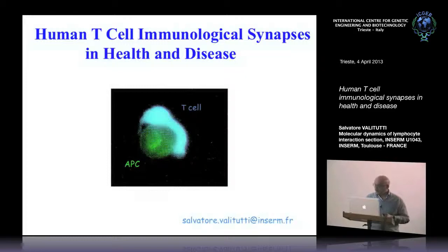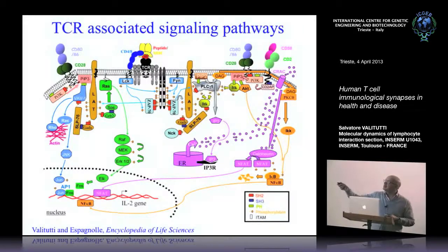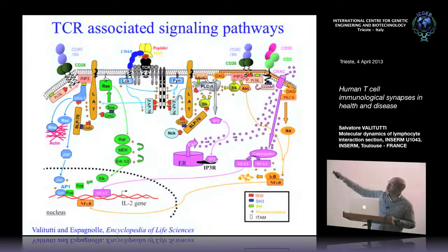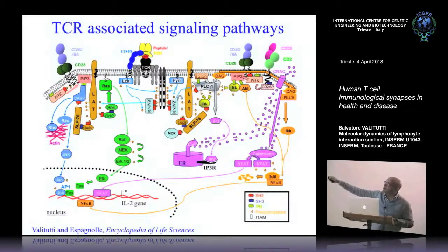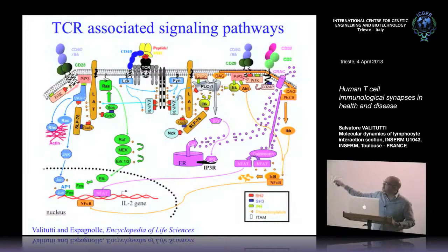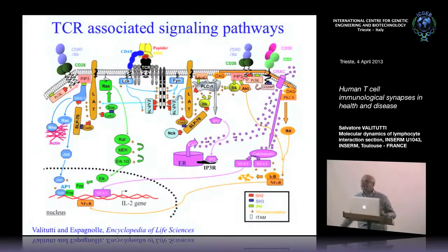As you know from the literature, when the T-cell receptor enters in contact with its own ligands — the peptide-MHC complexes displayed on the surface of the APC — a complex cascade of events is triggered in the T-cell, and all this signaling cascade converges in the nucleus to activate the interleukin genes and start the adaptive immune response.